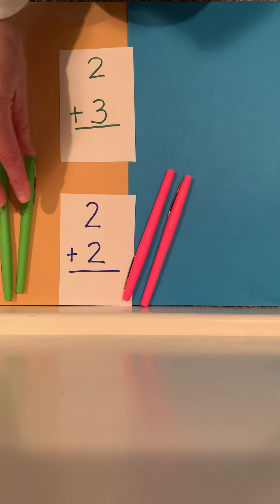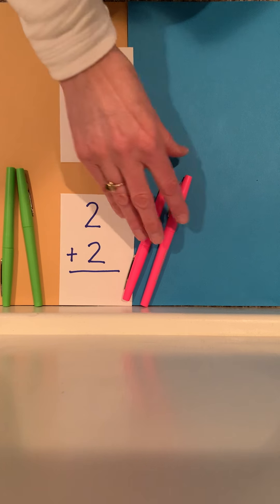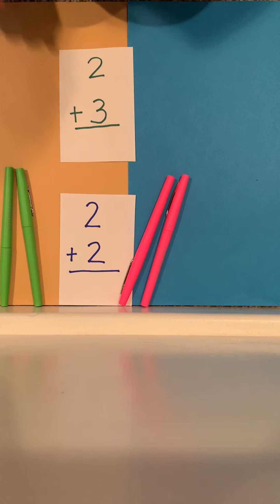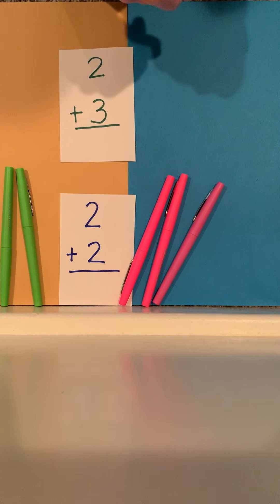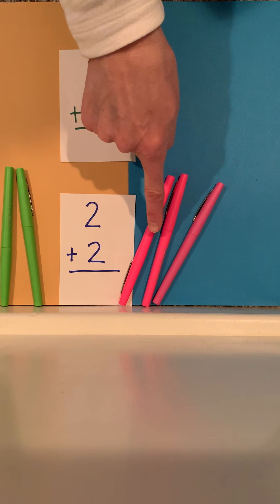So think about it in your head. If we have 2 plus 2 and that equals 4, how many would we have if we add 1 more? I'm hoping that your answer would be 5. 1, 2, 3, 4, 5.